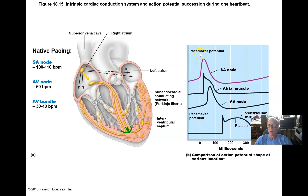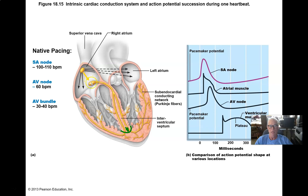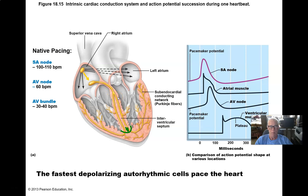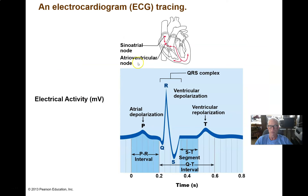If you look at the SA node cells, they reach threshold soonest. The AV node cells, if they were on their own, would not reach threshold for quite a few more milliseconds — they pace more slowly. They don't get a chance to do that, of course, because the wave of depolarization produced by the SA node spreads right down to the AV node through the atria. So the fastest depolarizing cells are the SA node, and therefore they are the pacemaker.